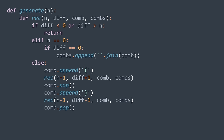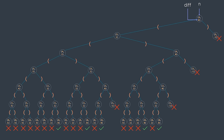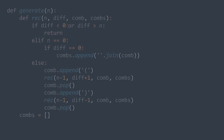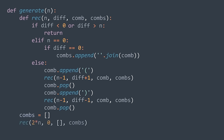We can optimize by returning early if diff > n, because it means we don't have enough remaining parentheses to close all opening ones. In the main solution function, we create the comps array, then call rec with 2*n (not n, since n represents pairs and each pair is two parentheses). After filling comps, we return it.